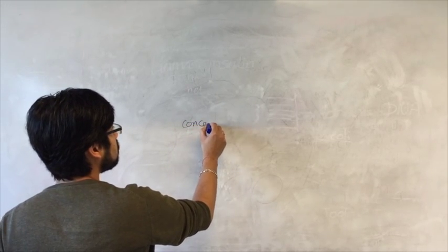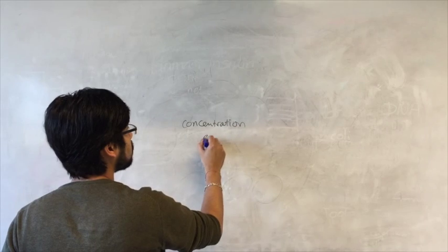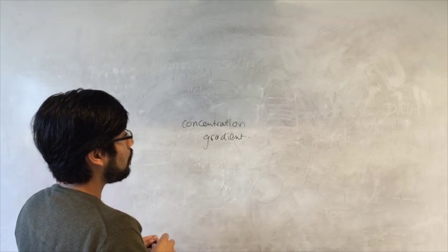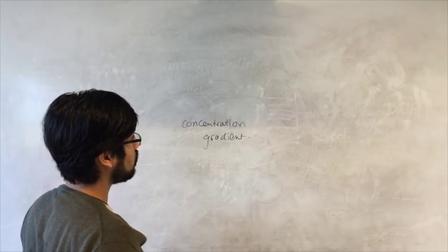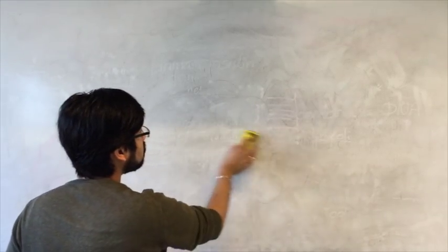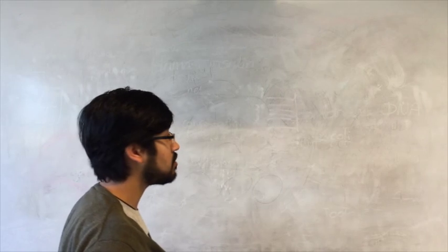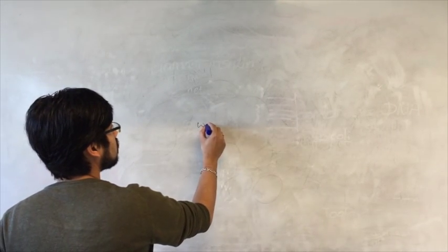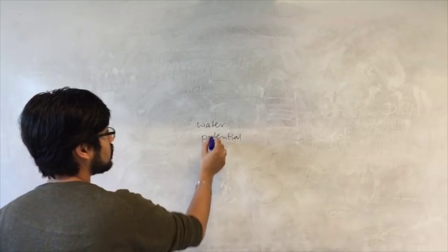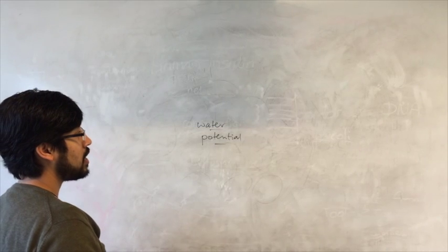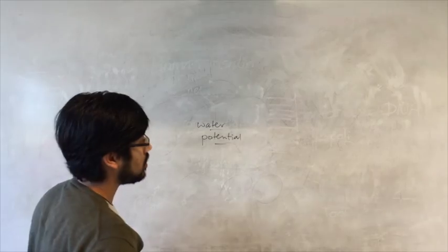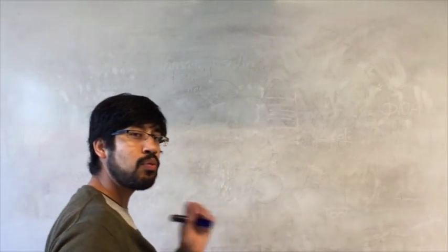Water is always moving down a concentration gradient — it diffuses. But the reason why it moves is not just simply down to concentration, so we don't usually refer to the concentration gradient. What we refer to is water potential. And water potential is different in many ways to concentration, so let's look at why water moves.